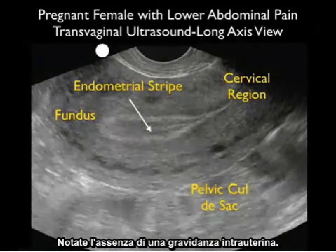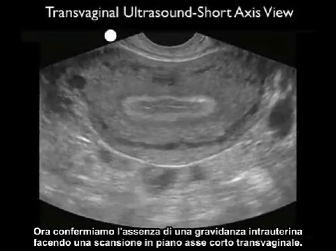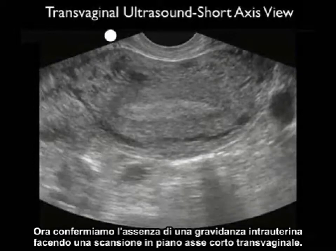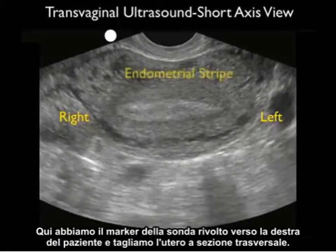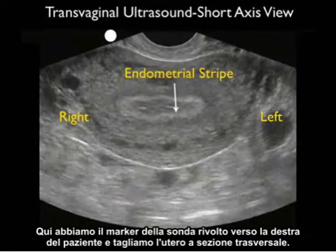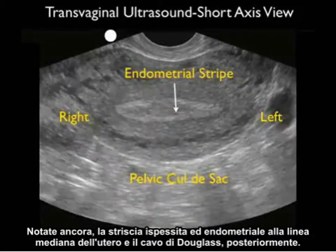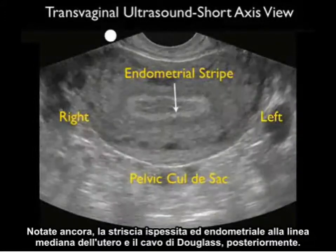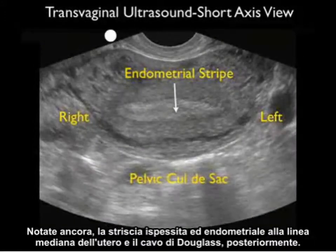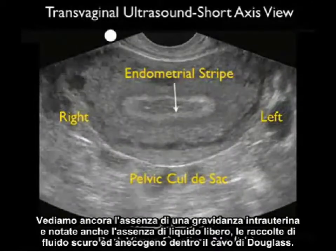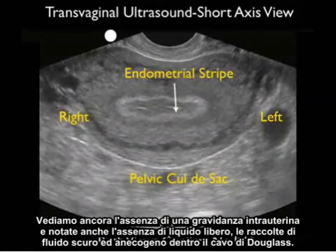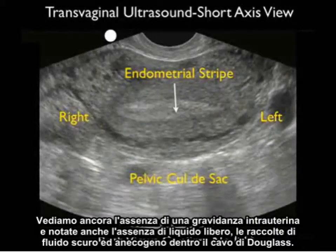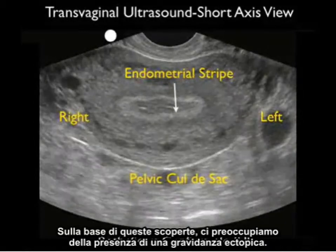Notice here the absence of an intrauterine pregnancy. Now we'll confirm the absence of an IUP by scanning in the transvaginal short axis plane, with the probe marker oriented towards the patient's right, cutting the uterus in cross-section. Again we see the thickened endometrial stripe in the midline, and we note the absence of free fluid — dark anechoic fluid collections within the pelvic cul-de-sac. Given these findings, we're now concerned about the presence of an ectopic pregnancy.